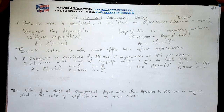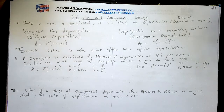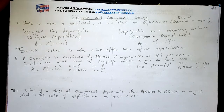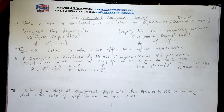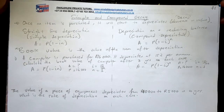We have two types of depreciation. We have straight-line depreciation and reducing balance depreciation. Reducing balance follows a compound formula, while straight-line depreciation follows the simple interest formula. Compound interest formula applies to reducing balance depreciation.